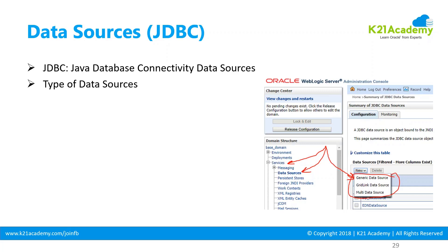There are different types of data sources. A generic data source is used when you have a single-node or single-instance database — Oracle, MySQL, or any other database. You can also create a grid link data source, which comes into picture when you have an Oracle Database with RAC — Real Application Cluster. RAC is the same database but running two instances on two machines for high availability.